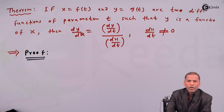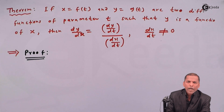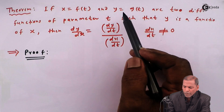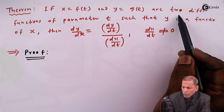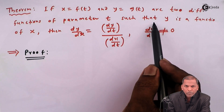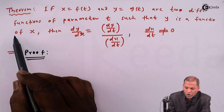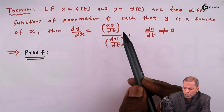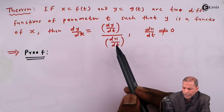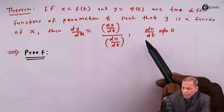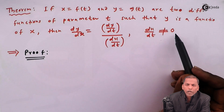Hello friends. Now we see a theorem based on parametric functions from the chapter on differentiation. The theorem states: if x equals f(t) and y equals g(t) are two differentiable functions of parameter t such that y is a function of x, then dy/dx equals (dy/dt) divided by (dx/dt), provided dx/dt is not equal to zero.